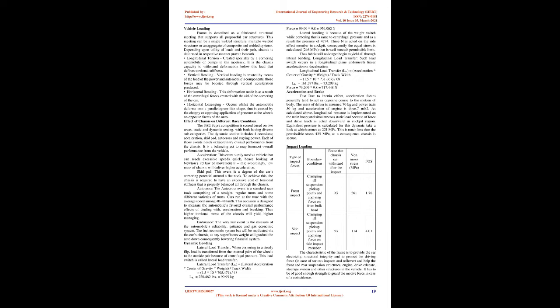Effect of chassis on different race conditions. The SAE Super competition is scored based on two areas: static and dynamic testing, with both having diverse subcategories. The dynamic section includes four events: acceleration, skid pad, autocross, and endurance. Each event needs extraordinary overall performance from the chassis. In the acceleration event, a low mass chassis gives better acceleration, following Newton's second law of motion F = ma.